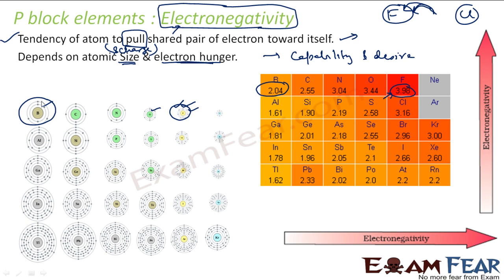Similarly, if you go down the group — comparing boron and indium — boron has better size. Hungerness is the same because both need one electron. And for charge, I'm talking about effective charge: the shielding effect by the orbitals. Boron has more effective charge. So in both cases, boron stands — boron will have more electronegativity as compared to indium.